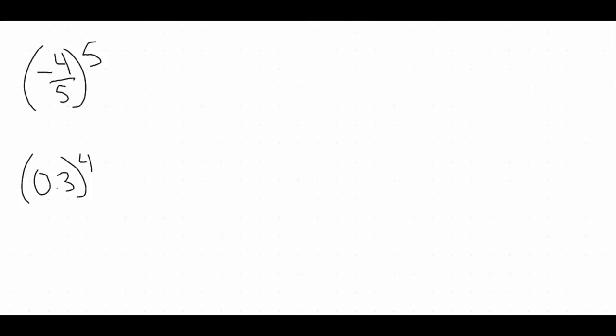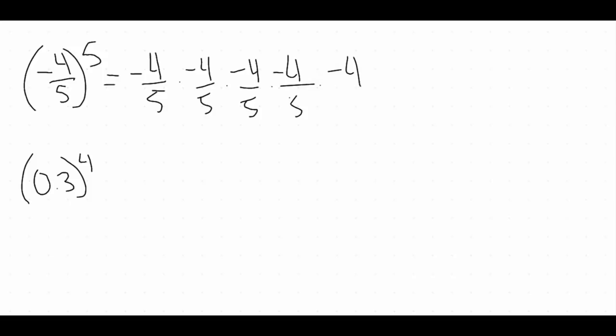Moving on to our next two examples. The first is negative four-fifths to the fifth power. That fifth power goes to all of negative four-fifths. So when we expand this to evaluate, we're going to have negative four-fifths times negative four-fifths times negative four-fifths times negative four-fifths times negative four-fifths — we are multiplying negative four-fifths by itself five times.